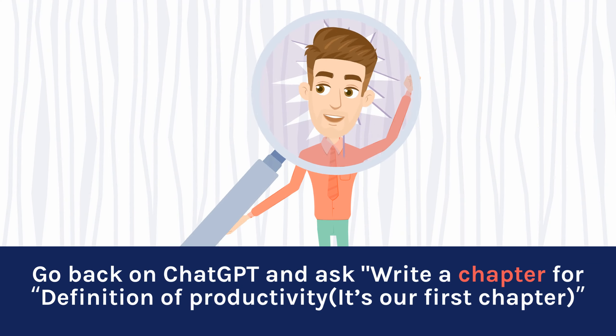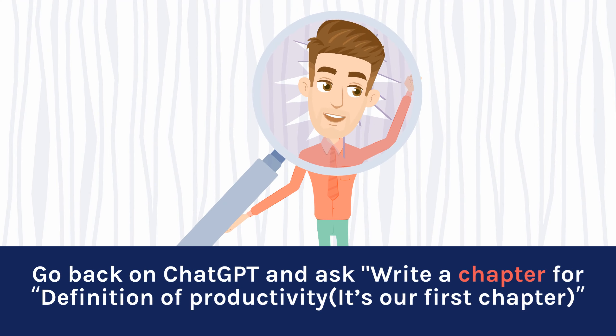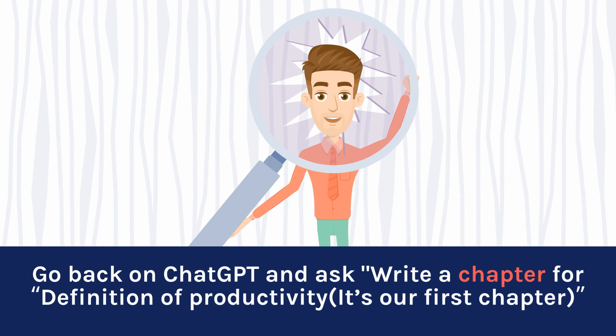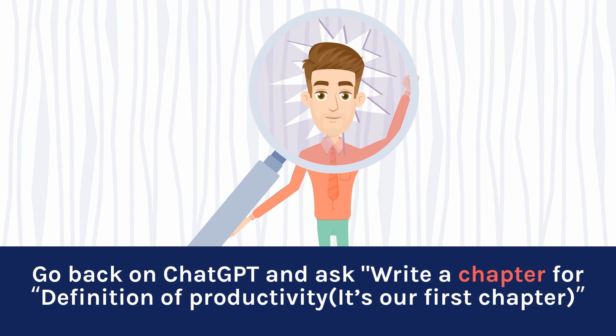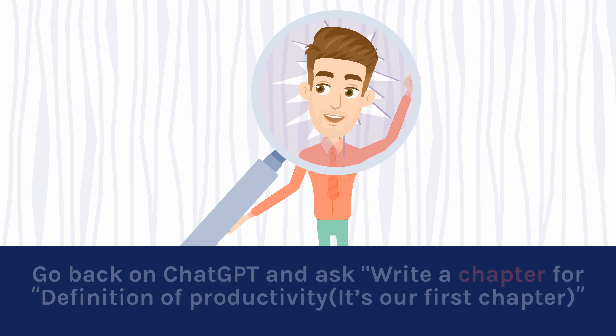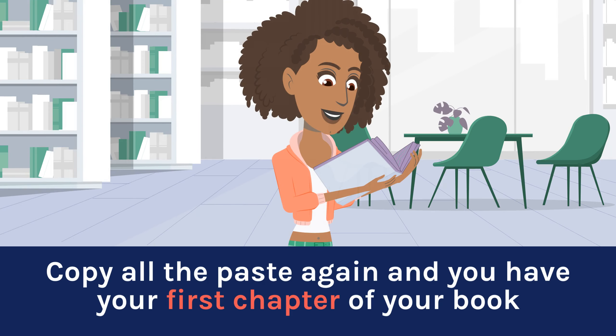Go back to ChatGPT and ask it to write a chapter for the definition of productivity — that's our first chapter. Copy all and paste again, and you have your first chapter of your book. Now do the same for all chapters, and in a few minutes you will have your entire book written.